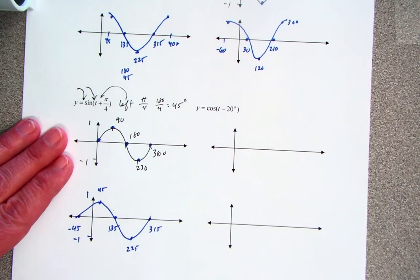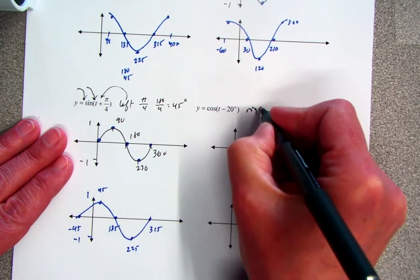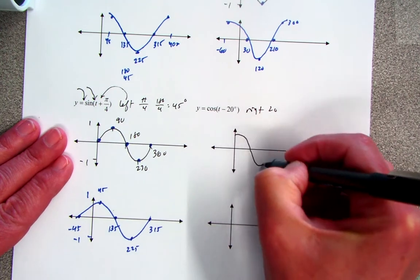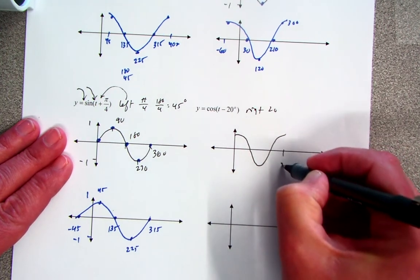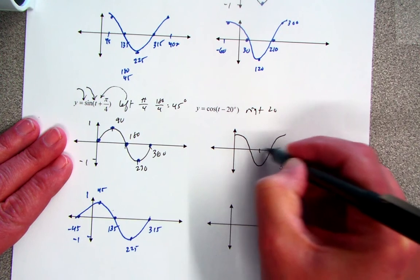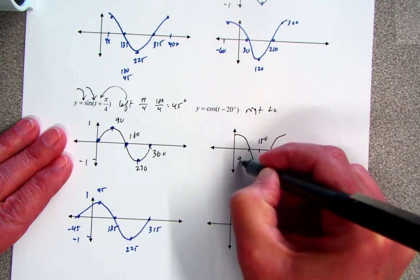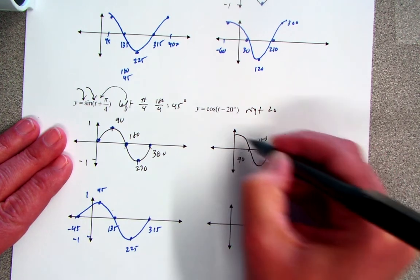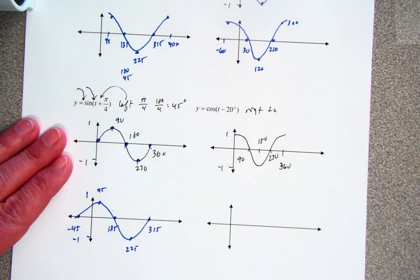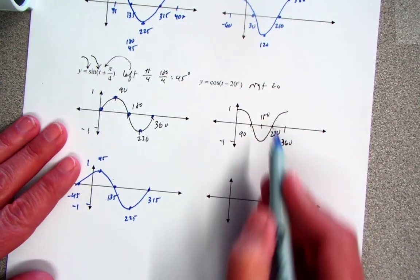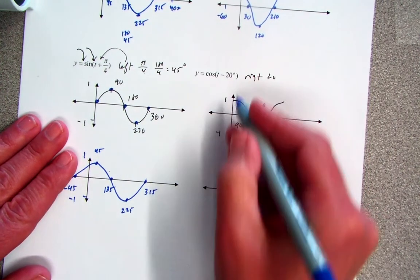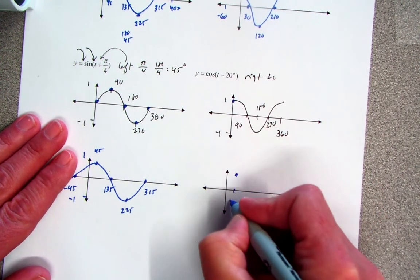One last time. This is going to be right 20. I always have kind of my base graph, and I label pretty much every time what the period is. These happen to be no change in the period or the amplitude. Soon we'll put all those changes in effect. So I'm going to go right 20. So this is at 20.